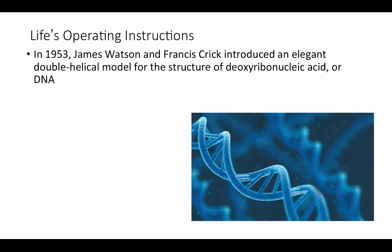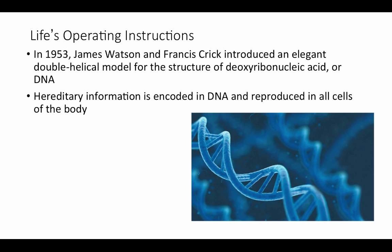DNA is both the storehouse and instruction book for all information needed to grow and operate an organism. In 1953, James Watson and Francis Crick introduced an elegant double helical model for the structure of deoxyribonucleic acid — DNA. Hereditary information is encoded in DNA and reproduced in every cell of the body. Every cell has the exact same set of instructions, and as we saw in the cell signaling chapter, which part of that instruction book is used depends on the signals each cell receives.